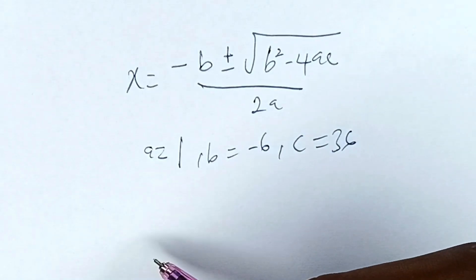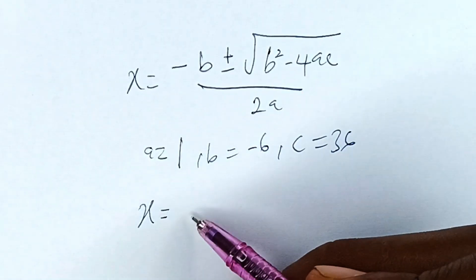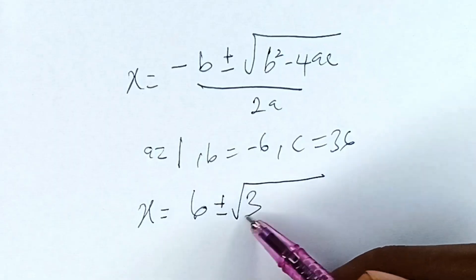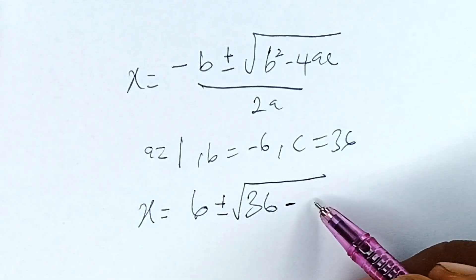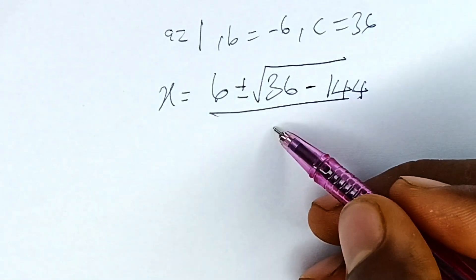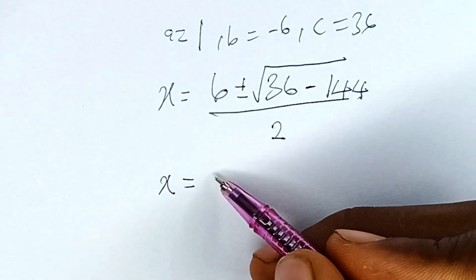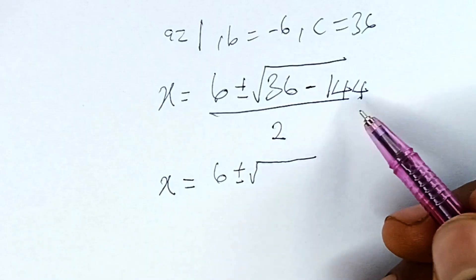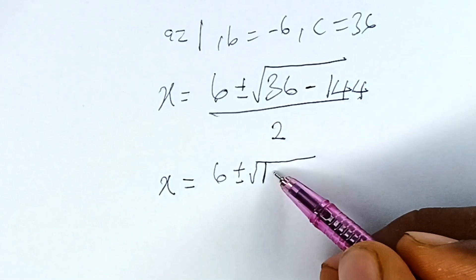So from here, we are going to have that x will be equal to minus minus 6, which is plus 6, plus or minus square root of minus 6 squared — which is 36 — minus 4ac, which is 4 times 1 times 36, equaling 144. All over 2a, which is 2 times 1, giving us 2.